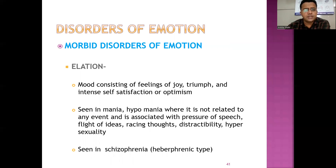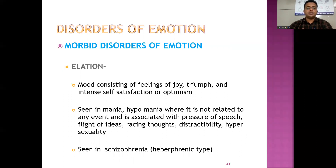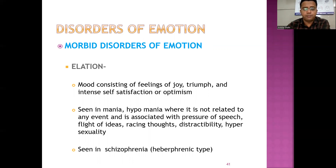Elation is a mood consisting of feelings of joy, triumph, and intense self-satisfaction or optimism. It is seen in mania and hypomania, where it is not related to any event and is associated with pressure of speech, flight of ideas, racing thoughts, distractibility, and hypersexuality. It is also seen in schizophrenia, mostly in the hebephrenic form.